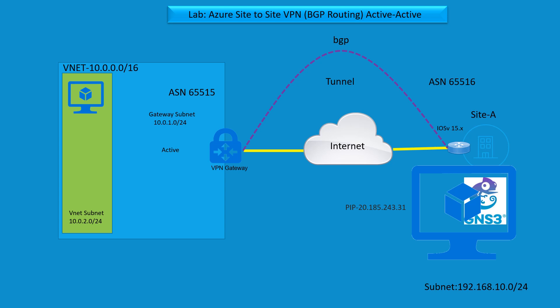Welcome back. We will continue our lab journey to the next level where we are going to have a VPN gateway functional in active-active mode. So far what we have seen, there's one active VPN gateway because we have never enabled that option. It means you're going to have one active gateway and at the same time you are also going to have a standby gateway, and that standby gateway won't be visible to you.